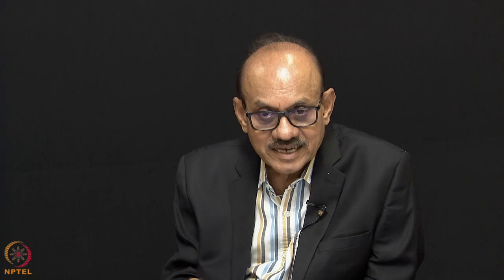It does not carry any extra information that the discrete distributions carried, but however it affords a continuous treatment. For example, for the discrete functions I would not have been able to carry out Fourier transforms or Laplace transforms, because these are continuous transforms. Whereas now for P(x) I can carry out Fourier transform or Laplace transform. So it is of some advantage in some situations.